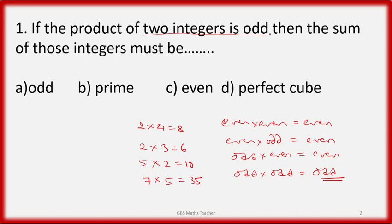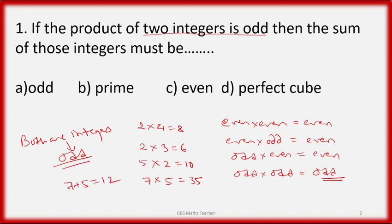So the product of two integers is odd only when both integers are odd. For example, 7 plus 5 equals 12. When both numbers are odd, their sum is always even. In this way the possible answer is even number.